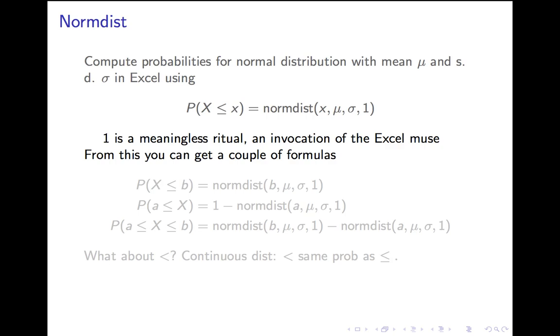Alright. So, normdist tells you the probability of getting less than or equal to some value. What if you want the probability of getting greater than or equal to some value? Well, that's the complement, right? If you're not less than something, you're greater than it. So, the complement is 1 minus the probability of the original event. So, to get the probability of being bigger than A, you take 1 minus normdist of A.